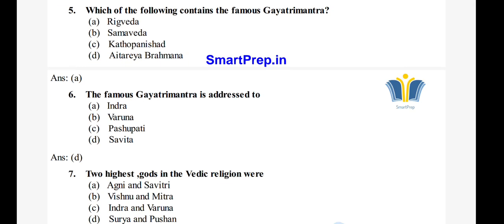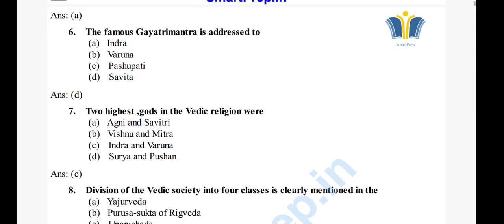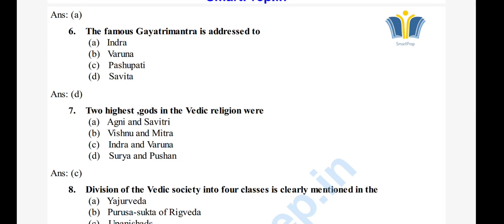Question 7: The two highest gods in the Vedic religion are — A) Agni and Sabitri, B) Vishnu and Mitra, C) Indra and Varuna, D) Surya and Pushan. The right answer is option C, Indra and Varuna. Indra and Varuna are the most important Vedic gods.